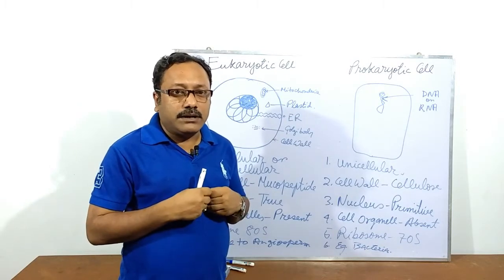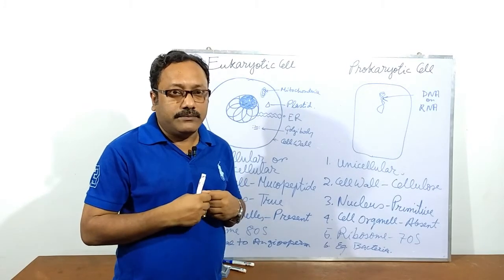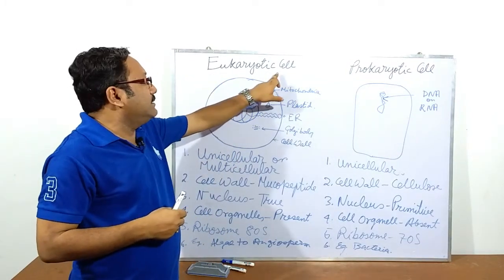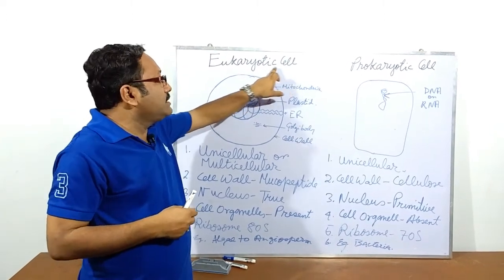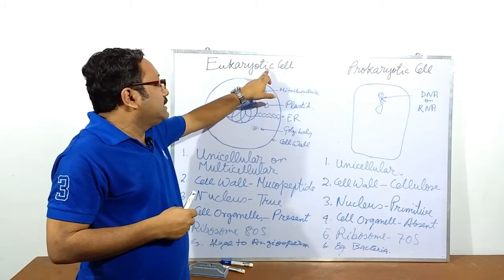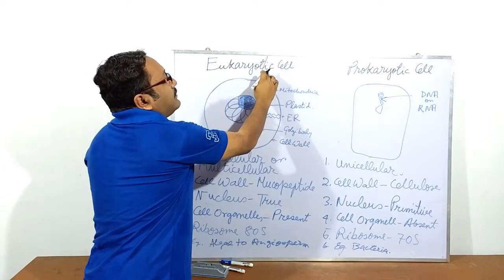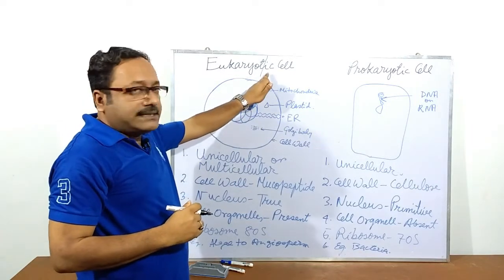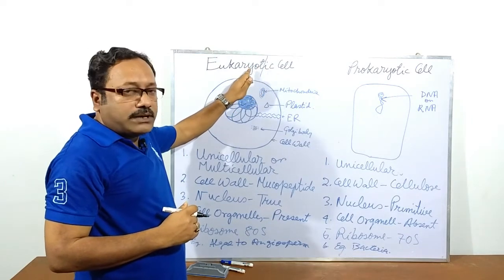This is a biomedical word. I will tell you the technique of how to decipher the biomedical word. See here, it is written on the board: eukaryotic cell. Cell is a noun, as you all know. The word before cell has the suffix 'ic'. 'ic' is the adjective suffix, so wherever we get 'ic' at the end of any word, that word is an adjective.